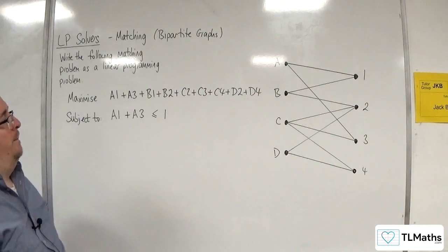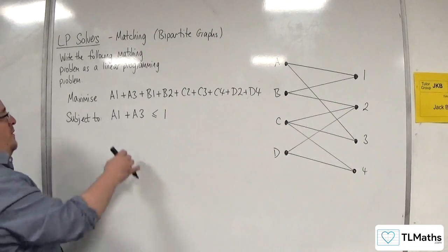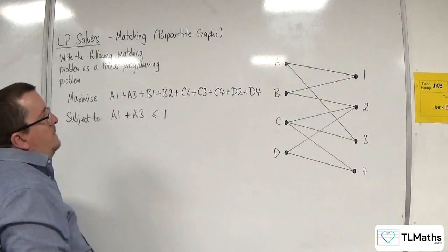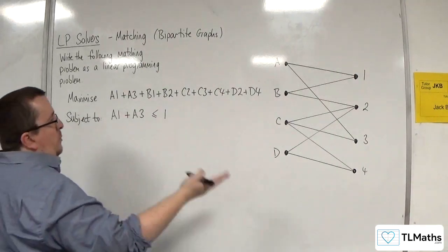Which we don't want to have. So that means that we're either going to have 0 plus 0, 1 plus 0, or 0 plus 1. Okay, so the same problem goes with B.